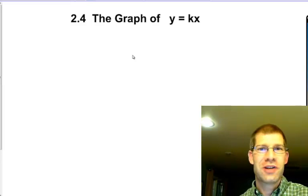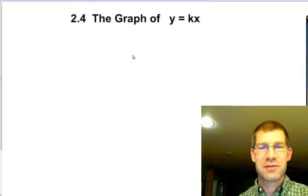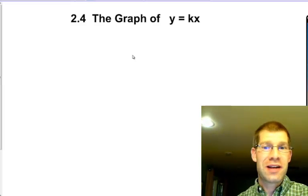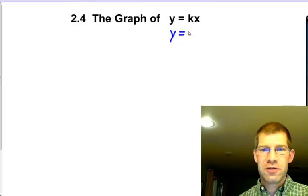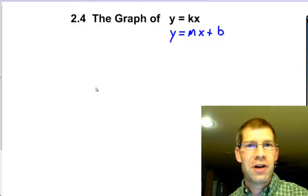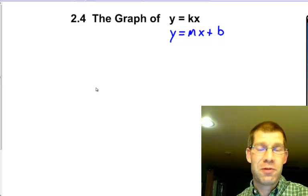Hi, here to do Algebra 2 notes on Chapter 2, Section 4, which is the graph of y equals kx. You may recognize that as being a line equation. If you go back to probably the line equation that you learned most was y equals mx plus b. This part here in blue I probably wouldn't bother writing if I were you, but of all the line equations you probably learned, if multiple ones, this is the most common one.